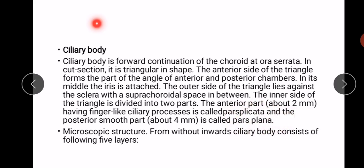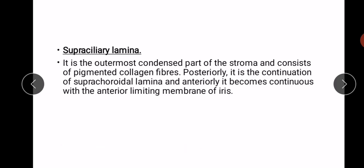Now we will discuss the microscopic structure. From without inwards, the ciliary body consists of the following five layers. The first layer is the supraciliary lamina — the outermost condensed part of the stroma, consisting of pigmented collagen fibers.